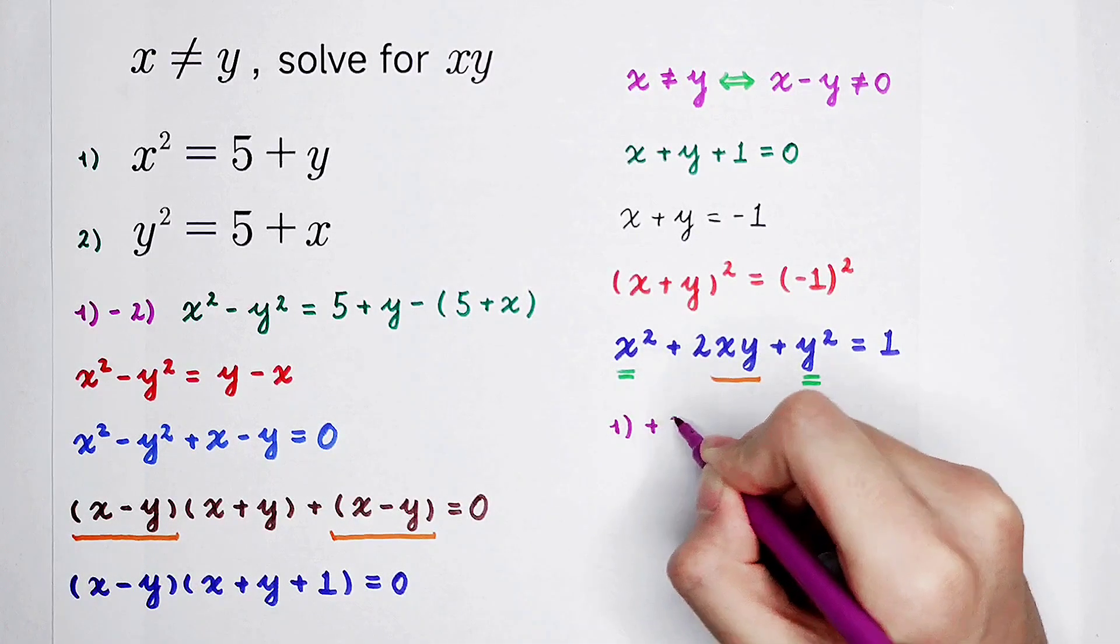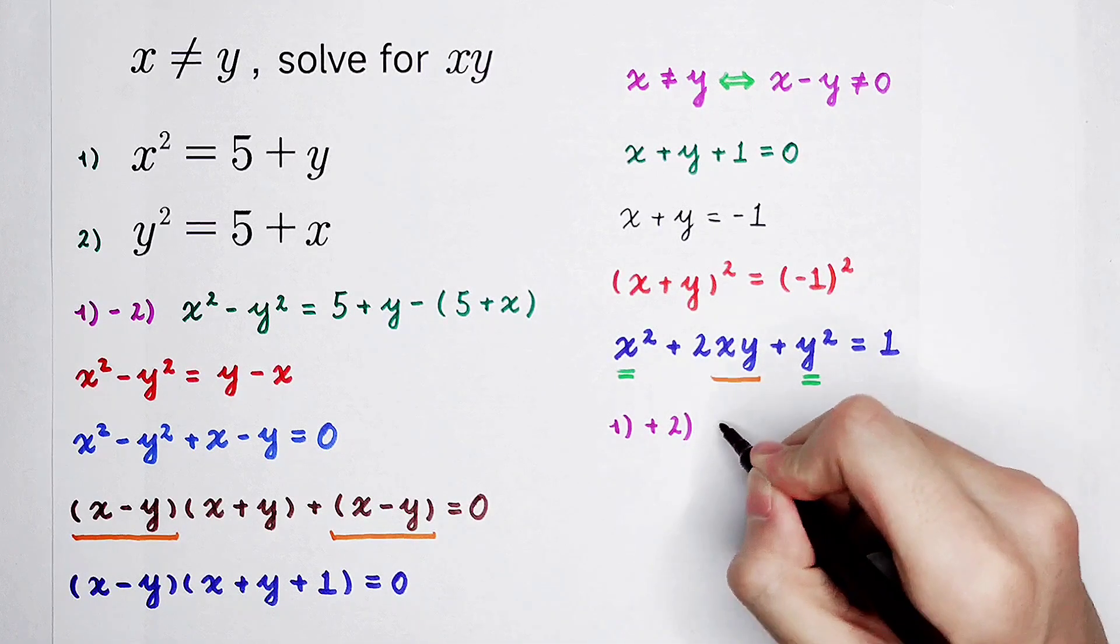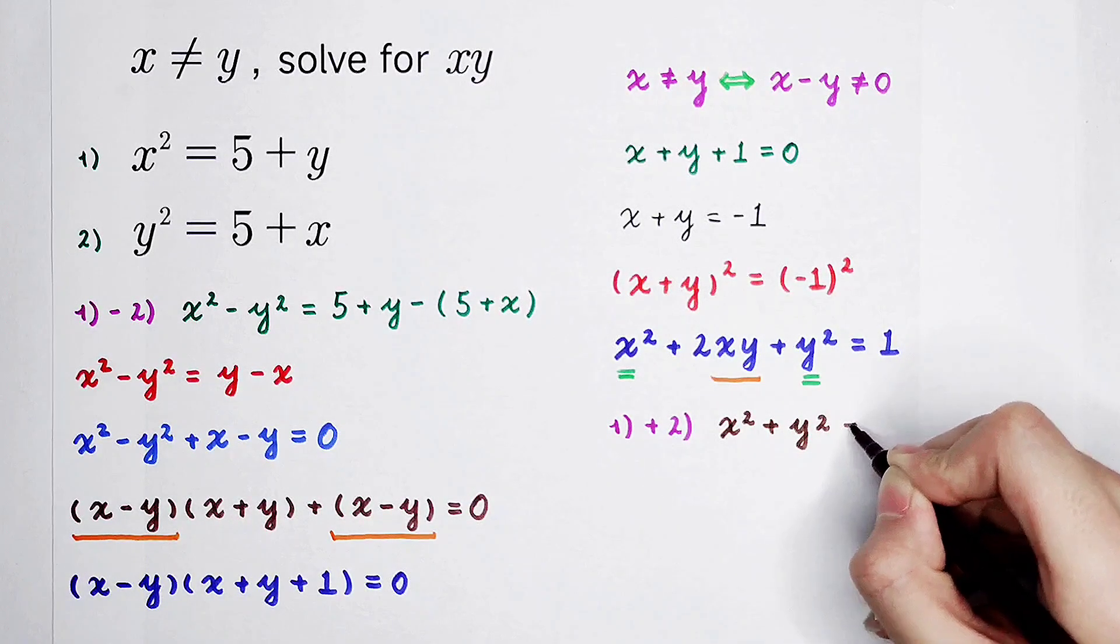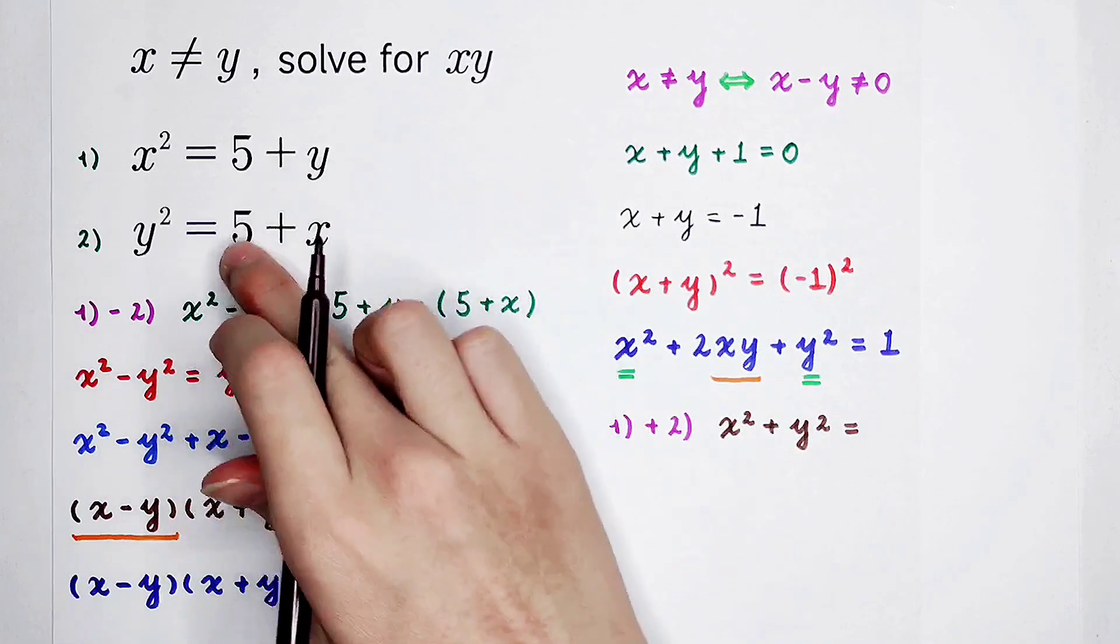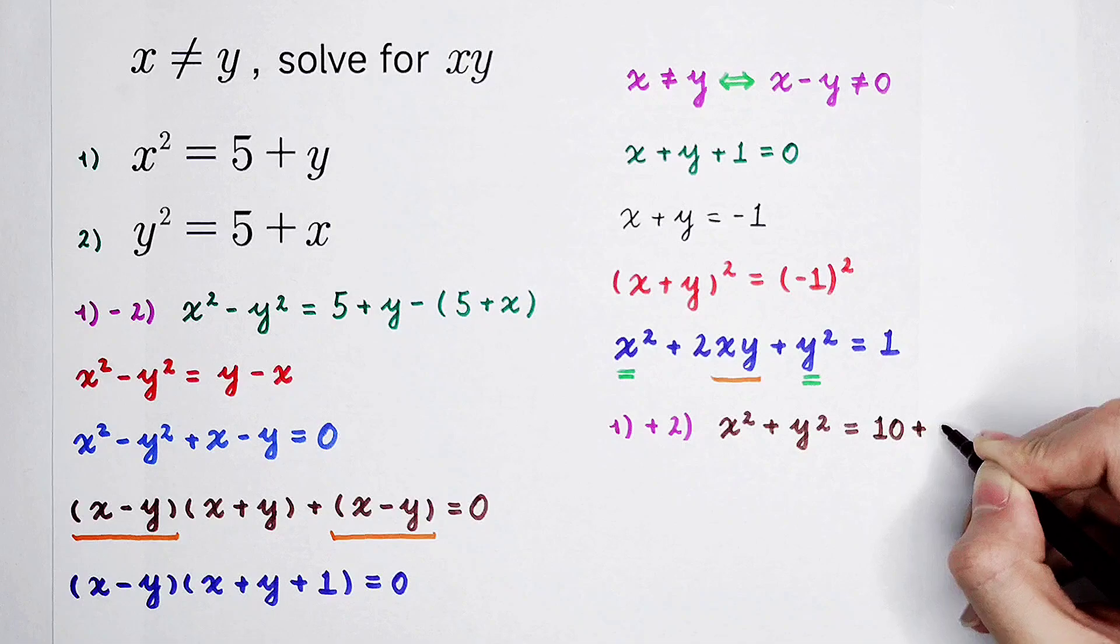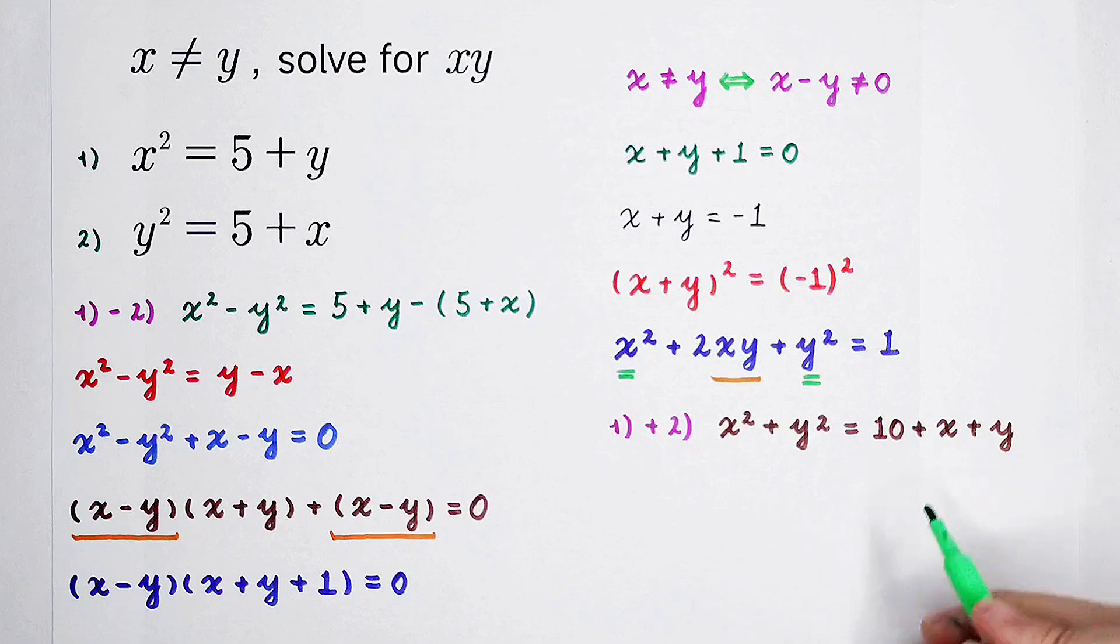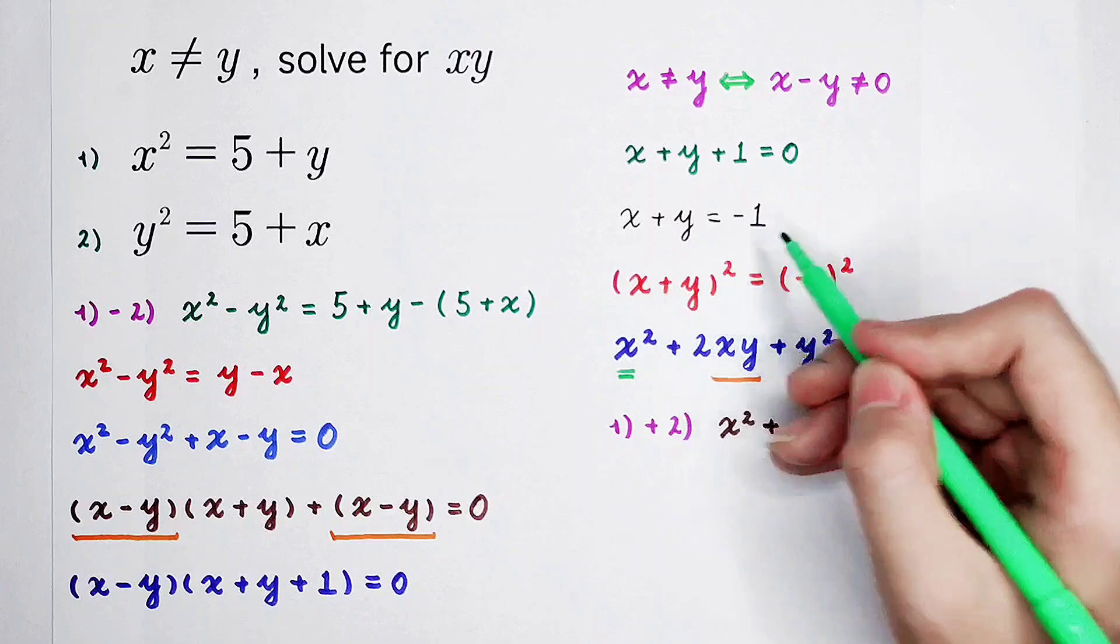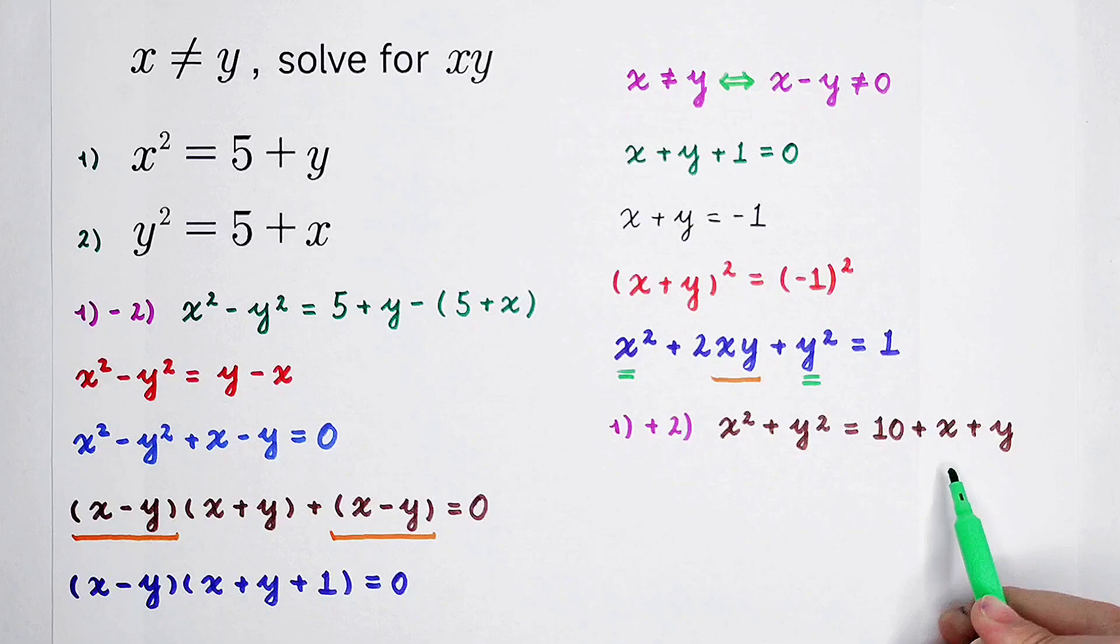So, 1 plus 2, we add them together. The left hand side is x squared plus y squared. And the right hand side is the sum of 5 plus y plus 5 plus x. It is 10 plus x plus y. But we know that x plus y is minus 1. So, 10 plus x plus y is just 10 plus minus 1, is 9.